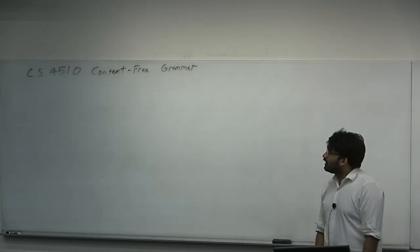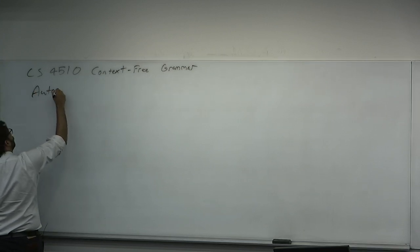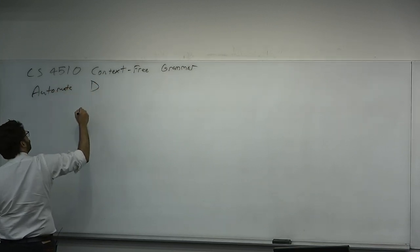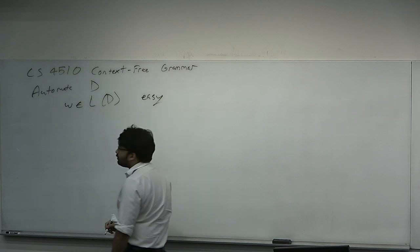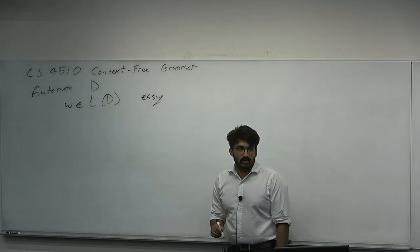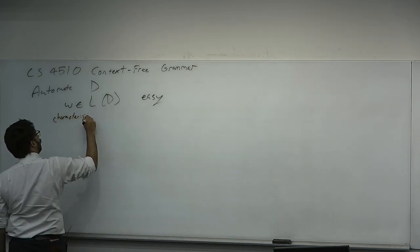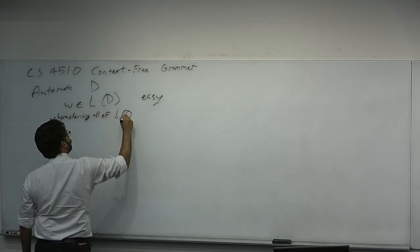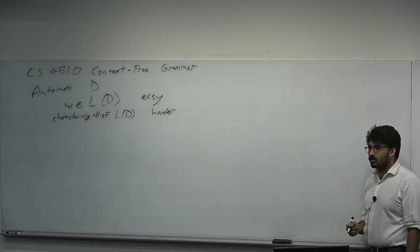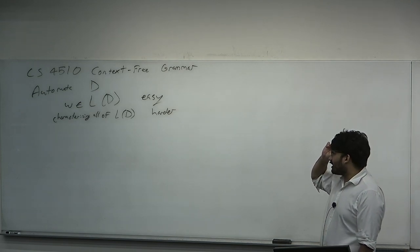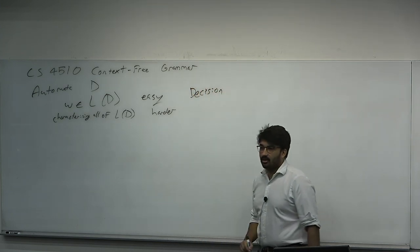A context-free grammar is a different model. Grammars are very different than automata in general. In automata, we have some automata D, like a DFA, and then you give it a word. If w is in L(D), it's kind of an easy problem — you can simply run the automata on the DFA and it will accept it or reject it. Characterizing all of L(D) is a little harder; you have to look at the automata and think about what it does on infinitely many inputs. An automata, at the end of the day, is tasked with decision: it's given an input, and it has to say yes or no.